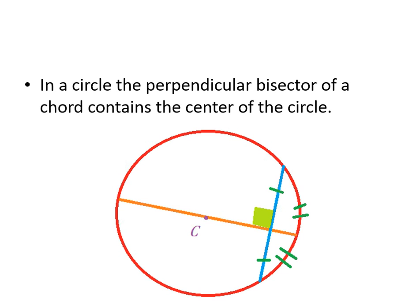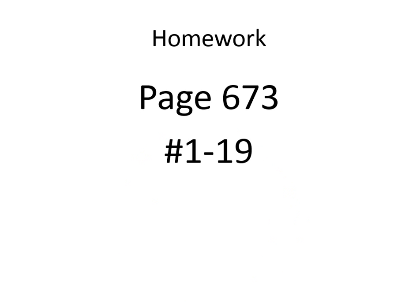In a circle, the perpendicular bisector of a chord contains the center of the circle. So any time you draw a perpendicular bisector of a chord, you've essentially drawn a diameter. Two diameters will find your center. That was the theorem-heavy section, and here is your homework for this section — make sure you get it done.